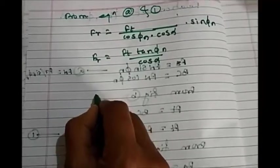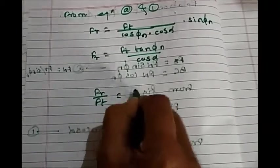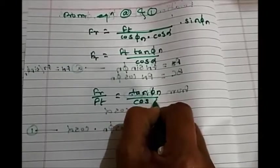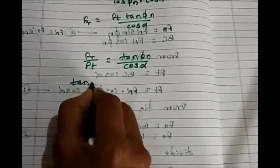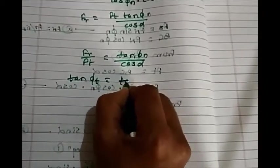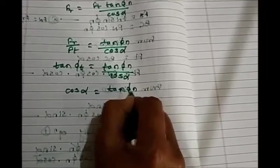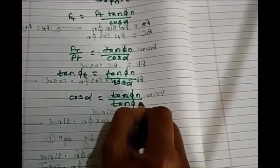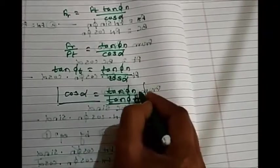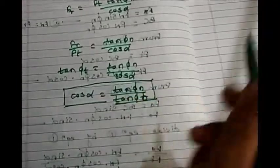So FR upon FT equals tan(φN) divided by cos(α). But we already know that FR/FT equals tan(φT). Therefore, tan(φT) equals tan(φN) divided by cos(α), or equivalently, cos(α) equals tan(φN) divided by tan(φT). This is the very important relation between the helix angle and the normal and transverse pressure angles that comes from the force analysis of helical gear.